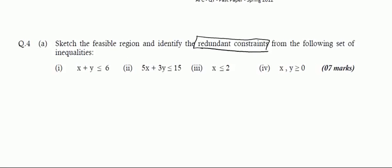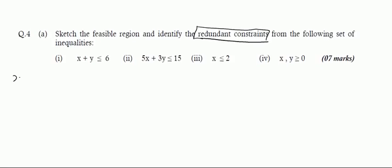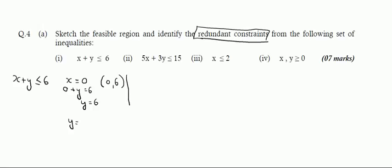Let us first sketch the feasible region. Our first inequality is x plus y is less than or equal to 6. To draw any straight line we need two points, and the easiest two points are the x and y intercepts. At the y intercept, x is always 0, so y equals 6, giving us the point (0, 6). At the x intercept, y is 0, so x equals 6, giving us the point (6, 0).